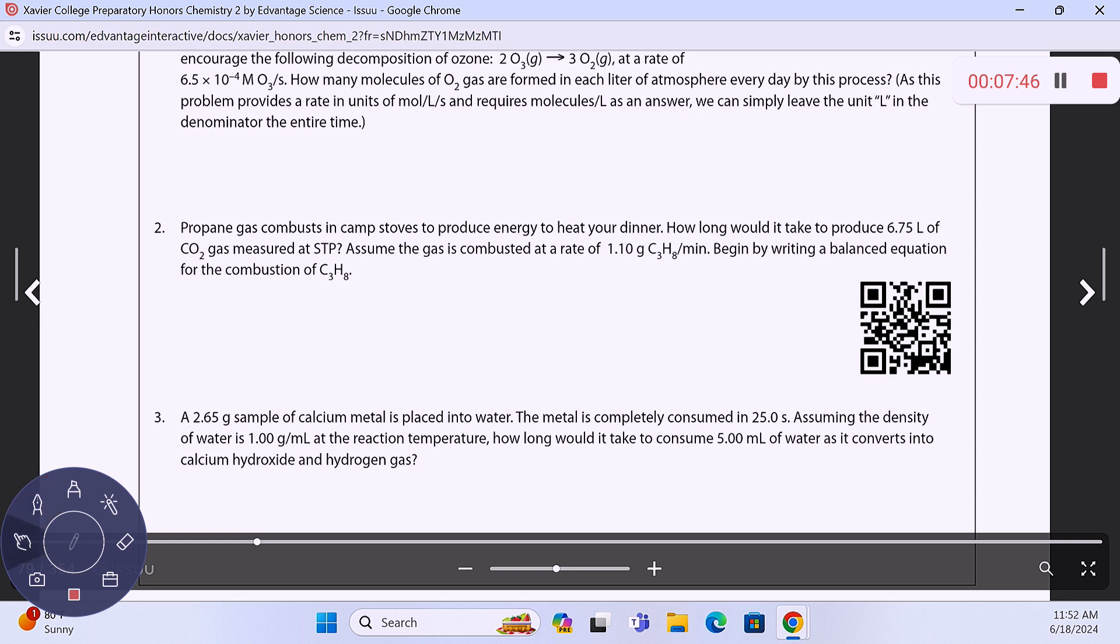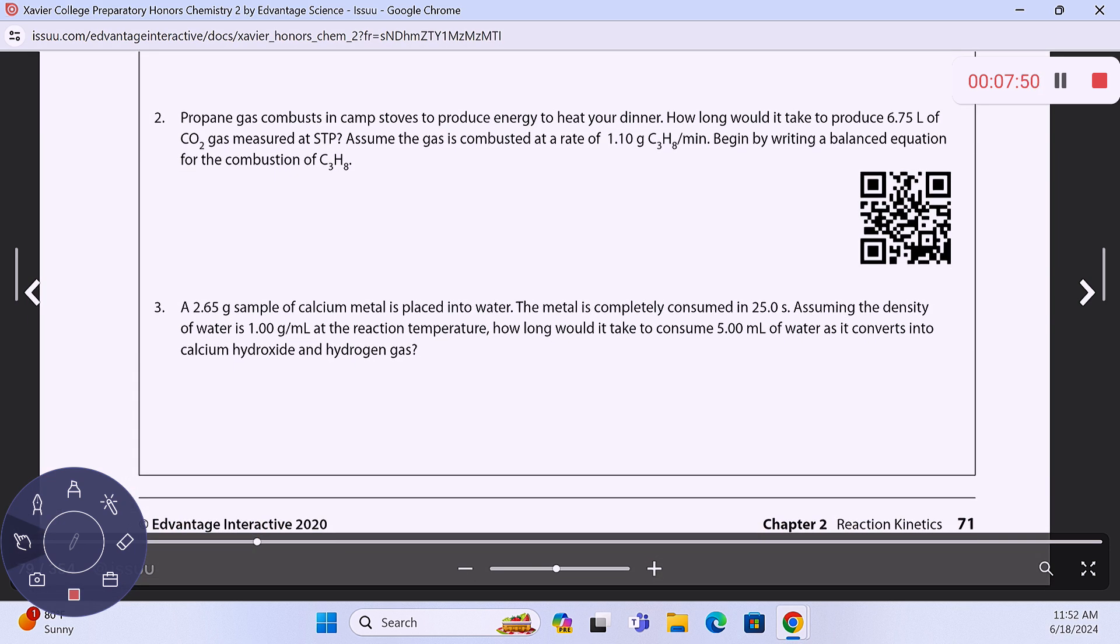Let's take a look at problem number two. Propane gas combusts in camp stoves to produce heat for your dinner. How long is it going to take 6.75 liters of carbon dioxide gas at STP? The gas combusts at this rate in grams per minute. Begin by writing the balanced chemical equation for the combustion of C3H8. So C3H8 combusts with oxygen to produce carbon dioxide and water. So this is going to be 1, 5, 3, 4. There's your balanced equation. And then we're starting with 6.75 liters of CO2, and they want to know how long it's going to take to produce that.